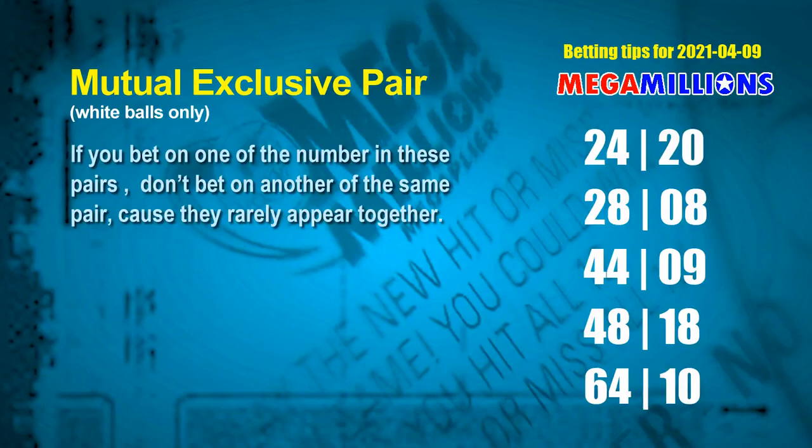Besides these best numbers, if you'd like to pick some numbers through the following units digit rule yourself, here are some tips to increase hit odds. Mutual exclusive pairs: these numbers both match the following ones rule, but according to hundreds of results, they rarely appear together. If you bet on one, don't bet on the other in the same pair. The white ball mutual exclusive pairs for the next draw are: 24 and 20, 28 and 08, 44 and 09, 48 and 18, and 64 and 10.